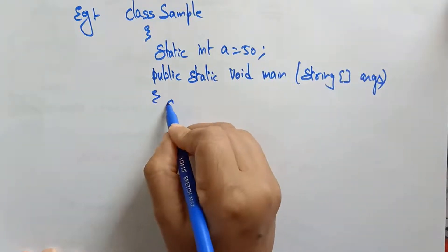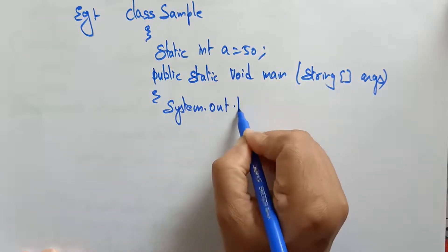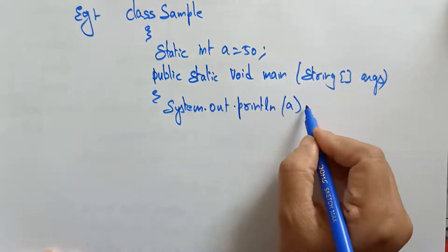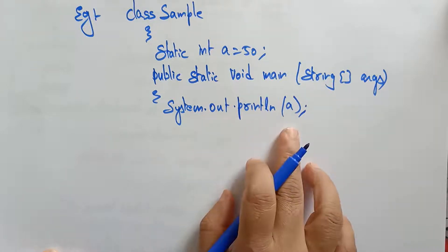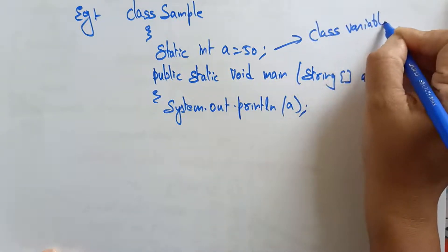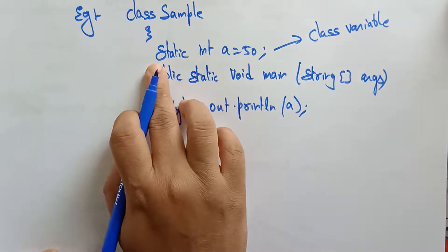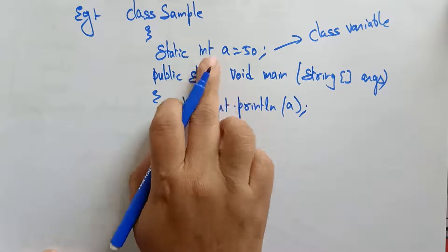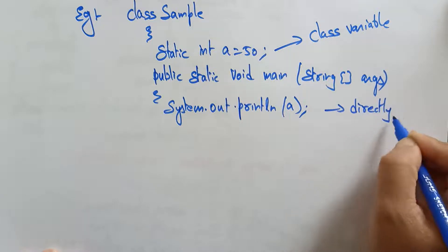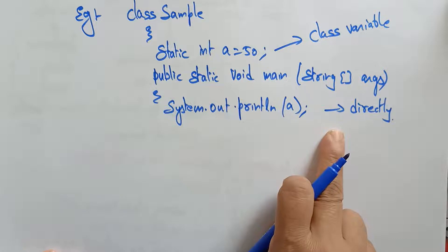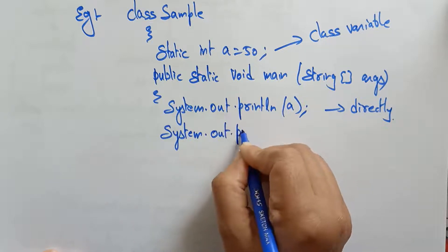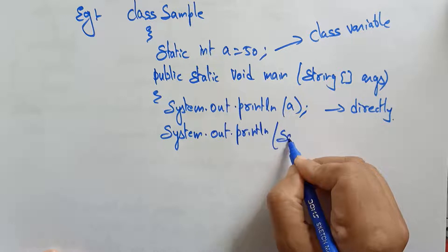Inside public static void main, first: System.out.println(a) — this is directly accessing the class variable. Since 'a' is a static member, we can access it directly. This is option one: direct access. The output is 50.